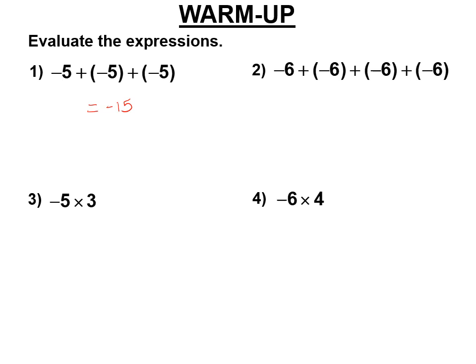If you owe six dollars to one person, another six to another, another six, and another six, you owe a total of 24. And as you look at that, you realize there was a shortcut. So negative five, three times: negative five times three is negative 15. And negative six, four times, is negative 24.